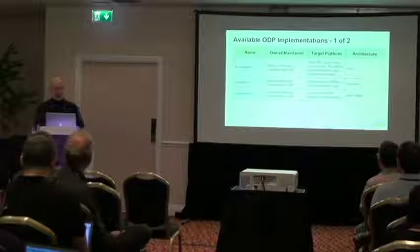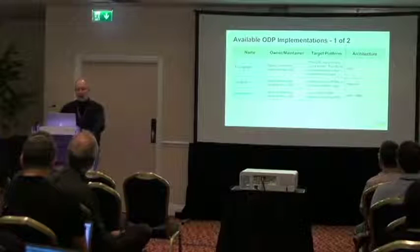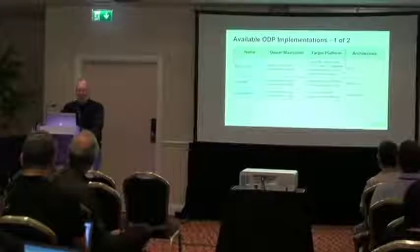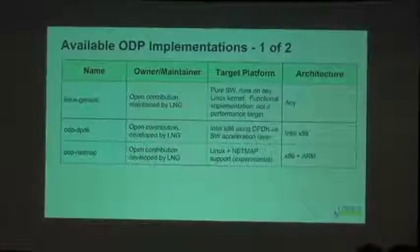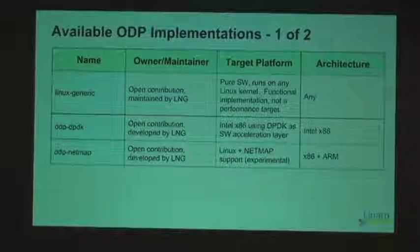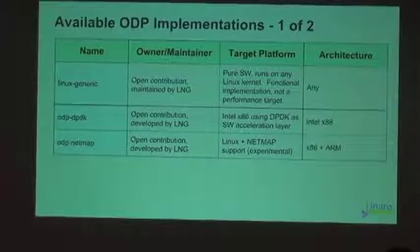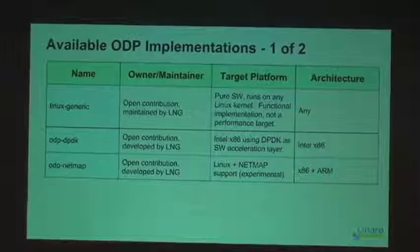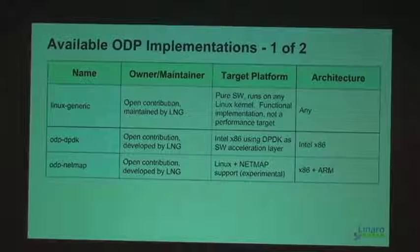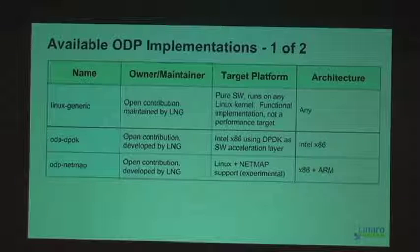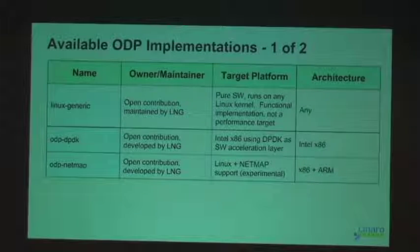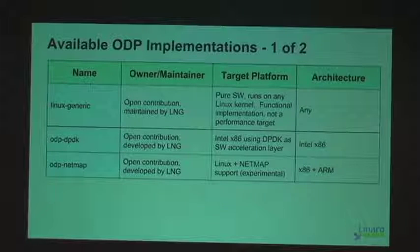Here are some examples of currently available implementations. Linux Generic is the main one distributed with the ODP Git repository, though we're in the process of splitting the repository to make clear that implementation and APIs are separate. Linux Generic is a pure software implementation designed to run on any Linux kernel — it's a functional implementation, not a performance target. It uses raw sockets for IO, which is functional but not high-performance. Because it only uses Linux APIs, it can run on any Linux kernel, giving people a starting point to be up and running with ODP within a couple of hours.